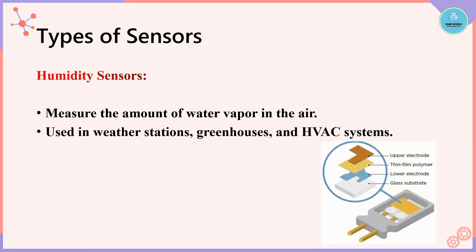Next are humidity sensors. These sensors detect the amount of water vapor in the air and are used in weather stations, greenhouses, and HVAC systems. They measure moisture and air temperature in the environment. Different types include capacitive, resistive, and thermal sensors, each with its own method of measuring humidity.